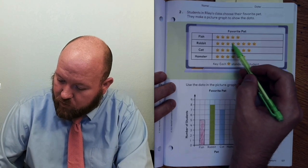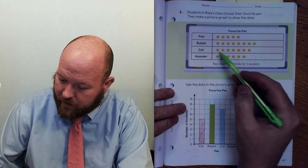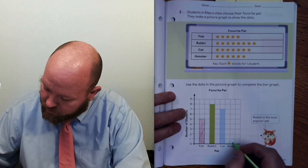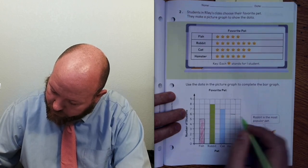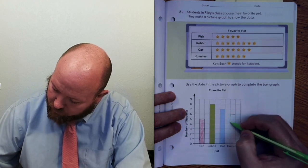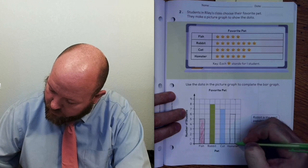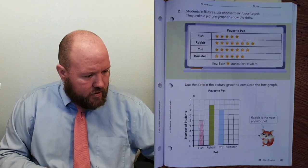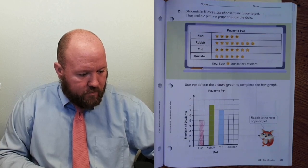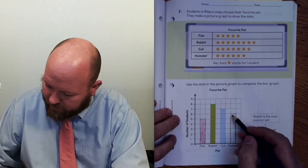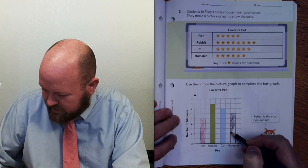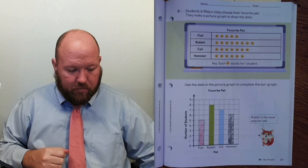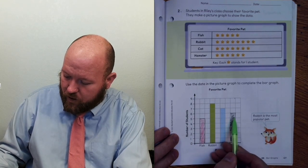Rabbit was supposed to be 8, and that's what they did. Cat is supposed to be 7 — that's what they did. Hamster is supposed to be 6. Go up to where it makes a straight line with 6, follow straight across, and then draw the bar down to the baseline. Make sure it lines up right where it's supposed to. That is how you draw a bar graph.